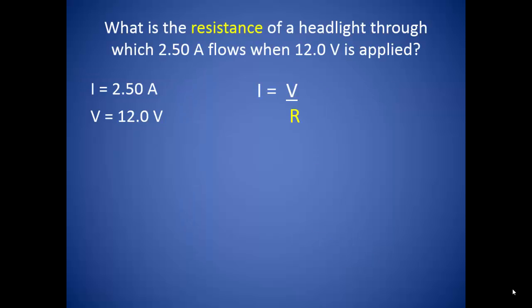So what is the resistance of a headlight through which 2.5 amps flows when 12 volts is applied? Well, we know the current and we know voltage, and we can rearrange Ohm's law to solve for resistance. Our 12 volts divided by 2.5 amperes gives us 4.80 ohms of resistance.